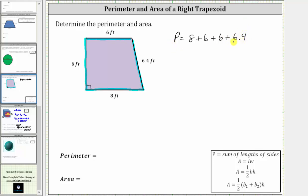Because of the decimal, let's determine the sum vertically, lining up the corresponding place values. We have 8 plus 6 plus 6 plus 6.4. If we want to, we can write 8 as 8.0 and 6 as 6.0. We bring the decimal point down into the sum.